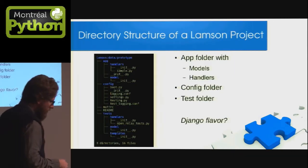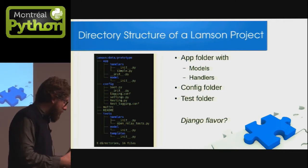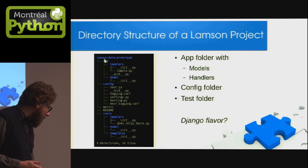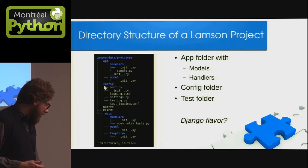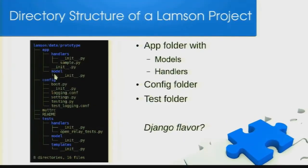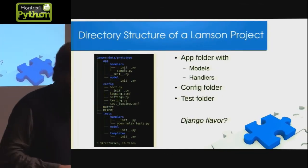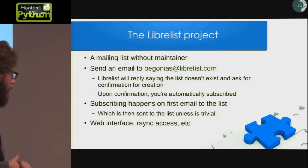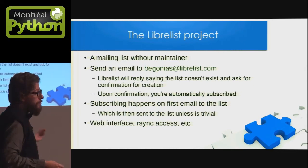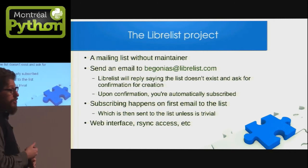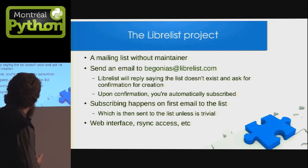Normalement, les projets Lamson ont une structure de répertoire particulière. On a un répertoire app avec handlers, models et aussi templates, un répertoire configuration et des tests. Et comme ça, pour moi, il y a un peu de Django flavor. Les projets LibreList sont inclus dans la distribution de Lamson — tous les projets pour étudier et apprendre comment ils fonctionnent.